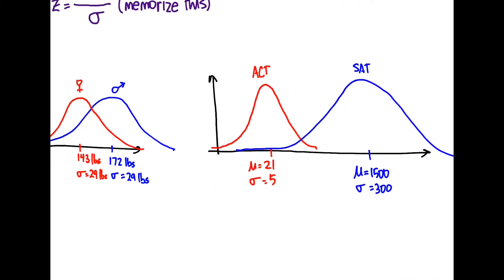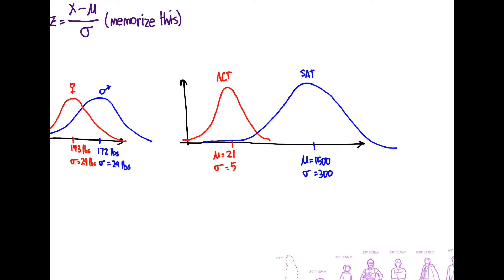And let's look at some other data. So here we have the ACT and SAT college testing entrance exams. And so the mean for the ACT whenever this data was provided was 21 with a standard deviation of five. And for the SAT it was 1500 with a standard deviation of 300.